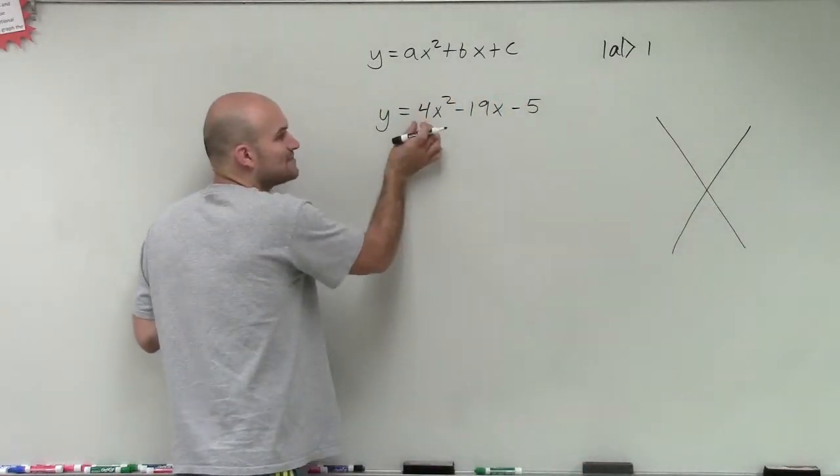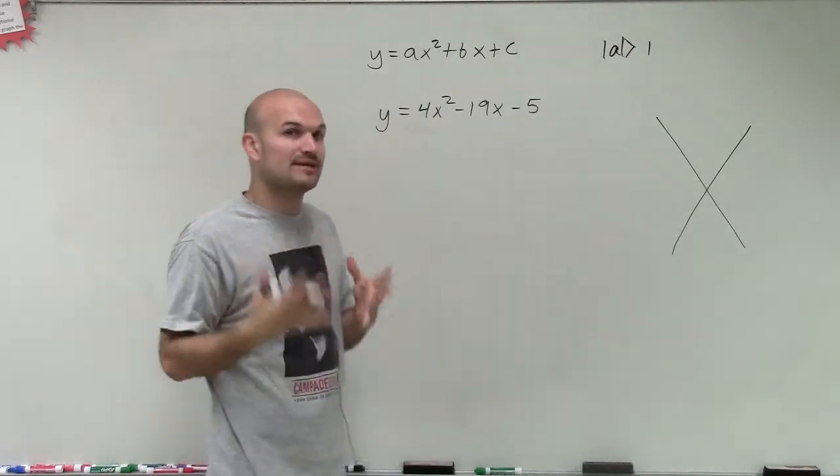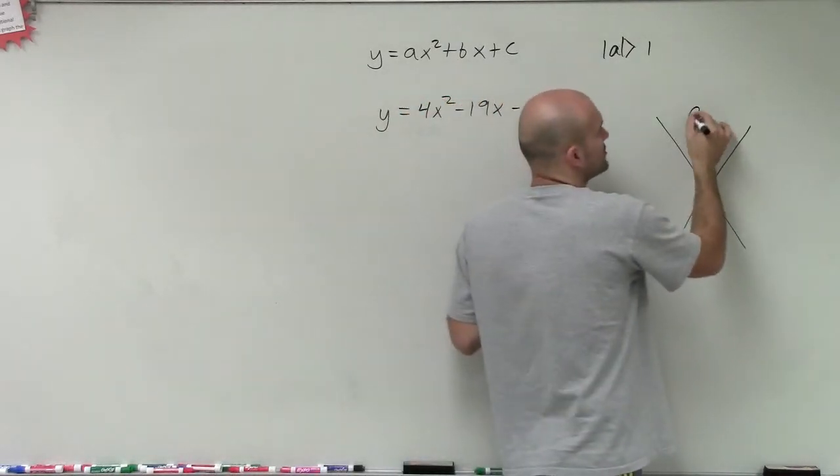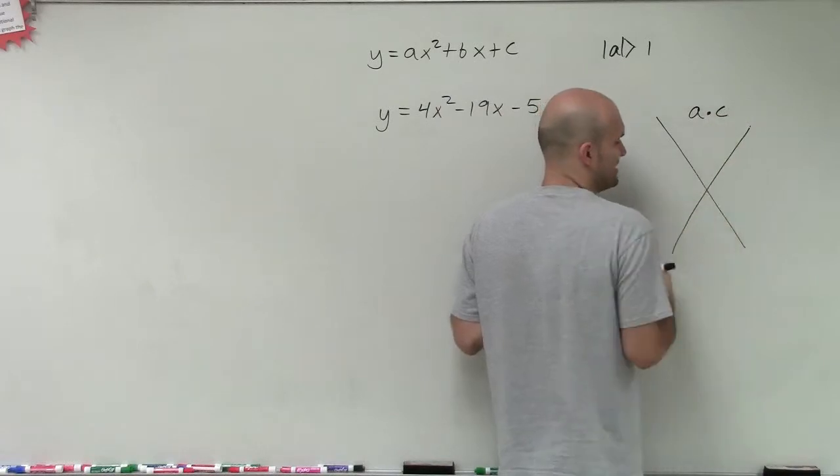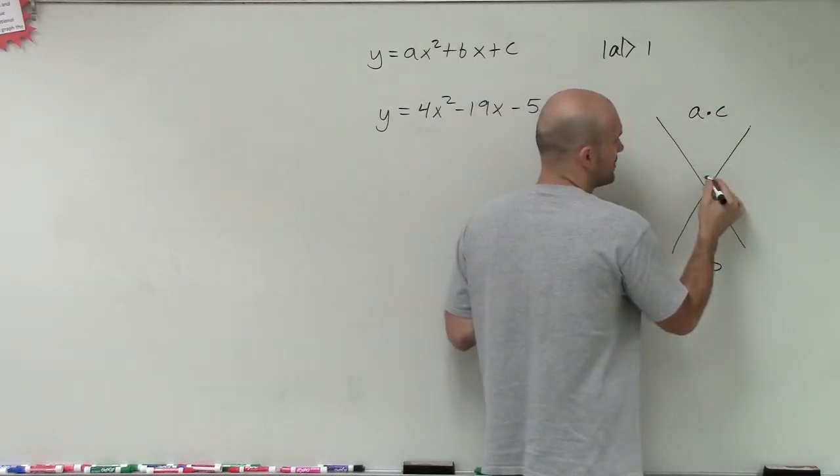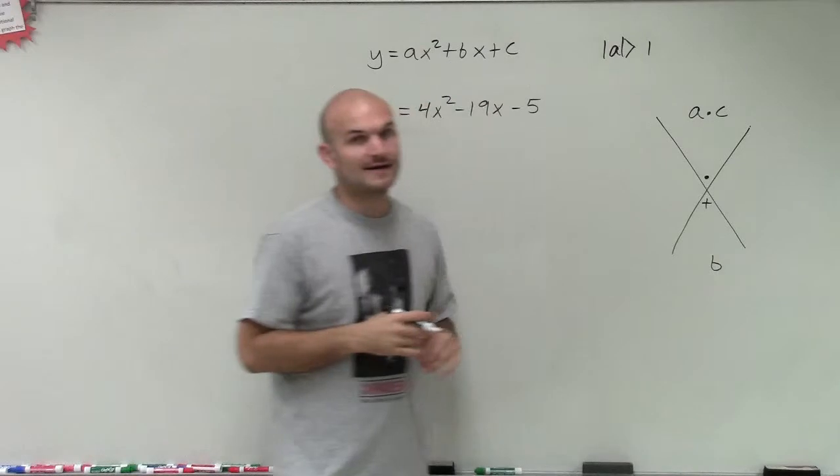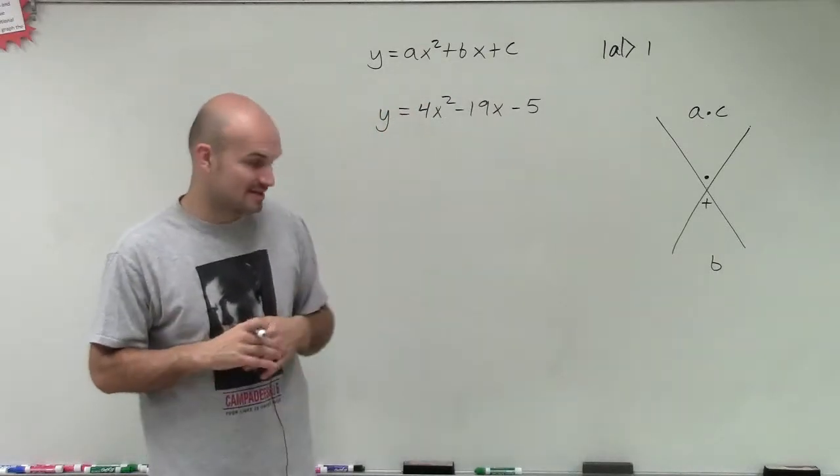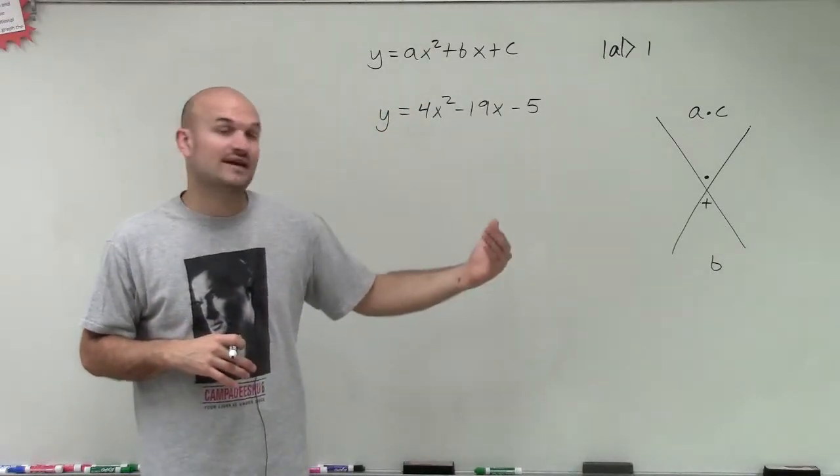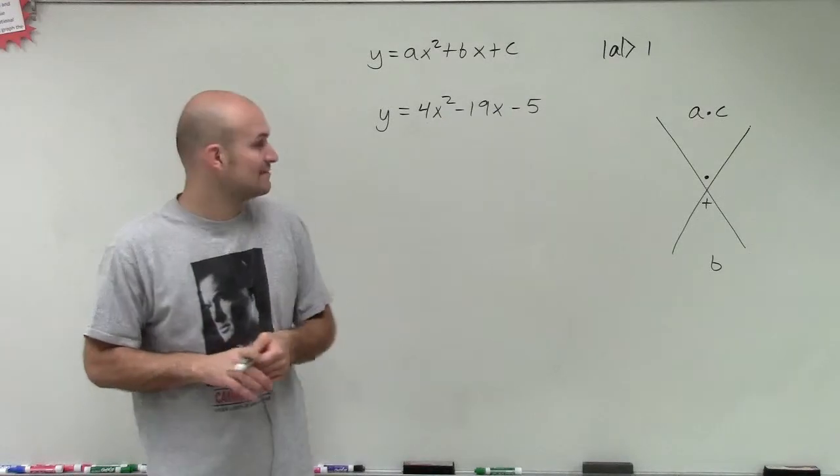However, when we have absolute value of A is greater than 1, it's going to be a little bit different. Now we're going to do A times C and then B on the bottom. We're still going to find what two numbers multiply to give you the value of A times C but then add up to give us B.